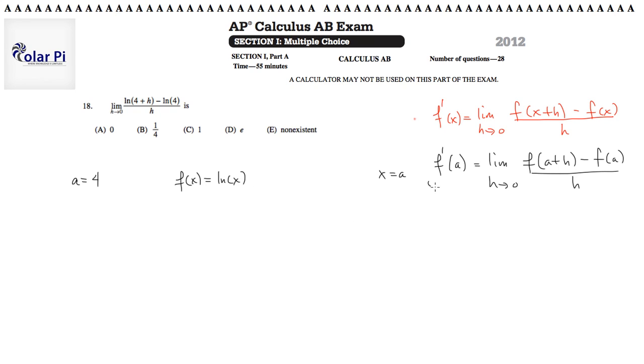Then, F prime of A must equal this expression, but that would mean F prime of 4 for the function F of X equals LN of X. I think we know how to do that much more efficiently. If F of X is equal to LN of X,